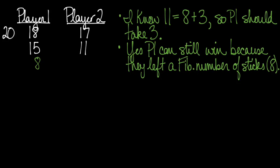Secondly, can player one still win this game? Based on what we did in lecture, I think that player one can still win. They left a Fibonacci number's worth of sticks on the table for player two. And if there's eight sticks on the table, player two can't possibly win. So I think that player one still has control over the game.